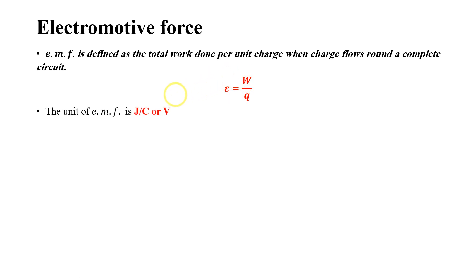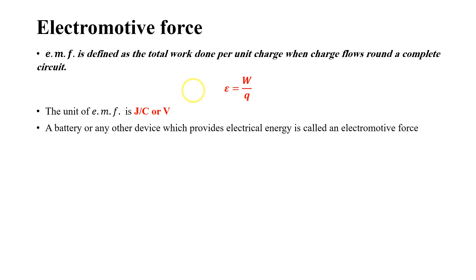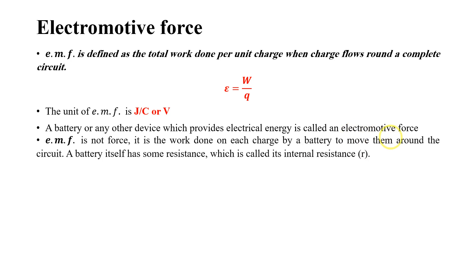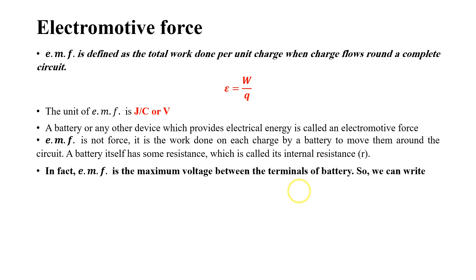The equation for EMF is the total work done in moving the charge around a complete circuit. The unit of electromotive force is joule per coulomb, or volt. A battery or any other device that provides electrical energy is called an electromotive force source. EMF is associated with the source of electrical energy — it is not a force; it is the work done on each charge by a battery to move them around the circuit.